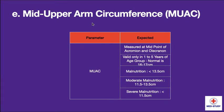Now coming to mid upper arm circumference, measured at the midpoint between the acromion and olecranon process. It is valid only in the 1 to 5 years age group and the normal value is 16 to 17 centimeters. It is malnutrition when mid upper arm circumference is less than 13.5 centimeters. It is moderate malnutrition when it is 11.5 to 13.5 centimeters, and severe malnutrition when it is less than 11.5 centimeters.